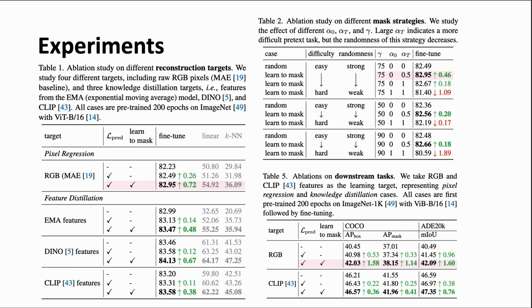We conduct extensive experiments to demonstrate the efficiency of our proposed HPM. It manages to bring significant improvements on different reconstruction targets consistently. Interestingly, we find that solely introducing the auxiliary objective and adopting random masking still boosts the performance, verifying that the ability of mining hard patches itself is crucial.